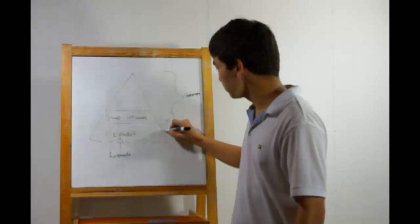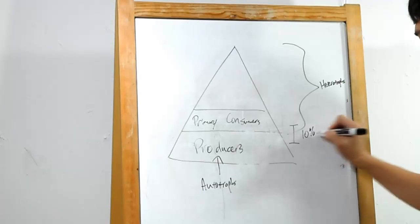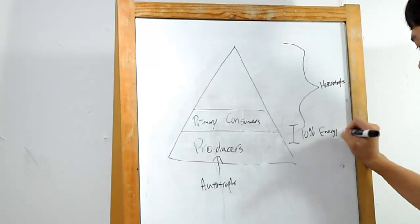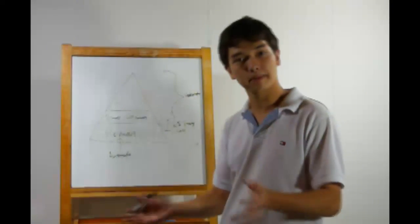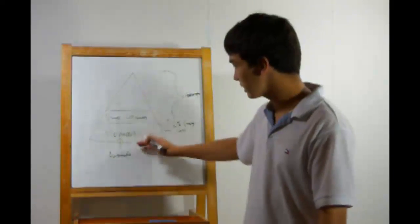Primary consumers will eat the producers. However, every time you move up a level in the pyramid, there's a 10% energy loss. That's why every level has less biomass than the previous level. If you took all the primary consumers and weighed them, they'd weigh less than all the producers.